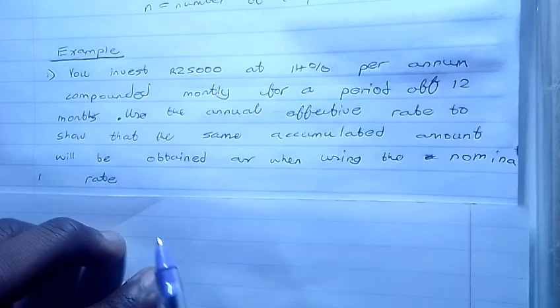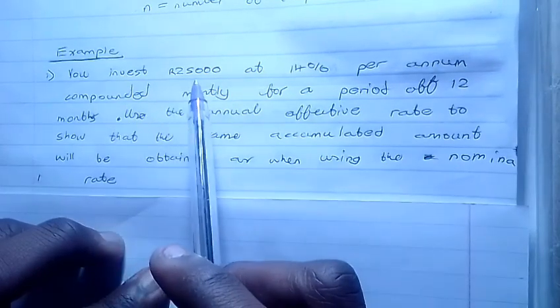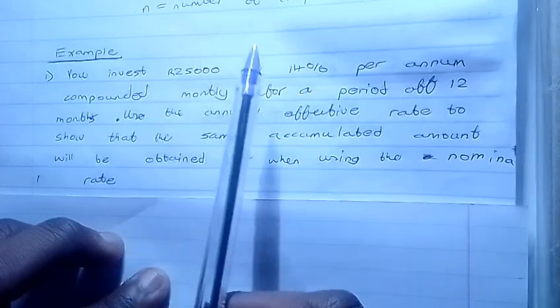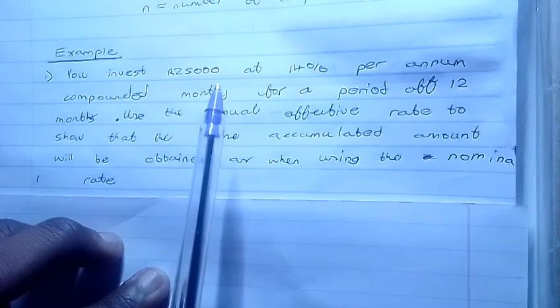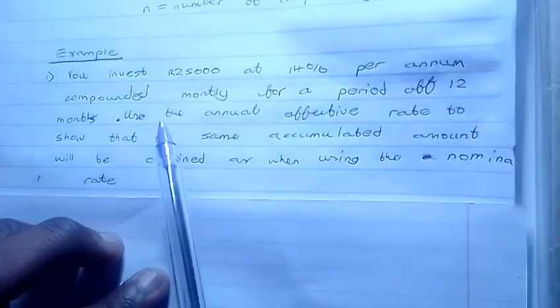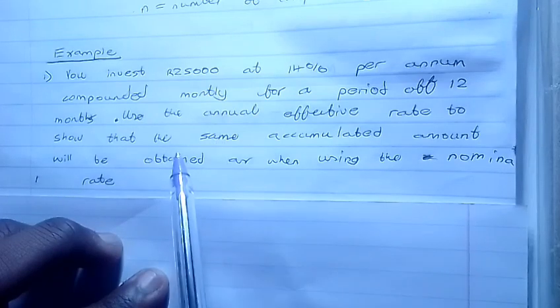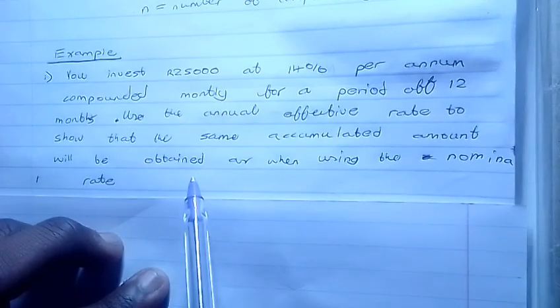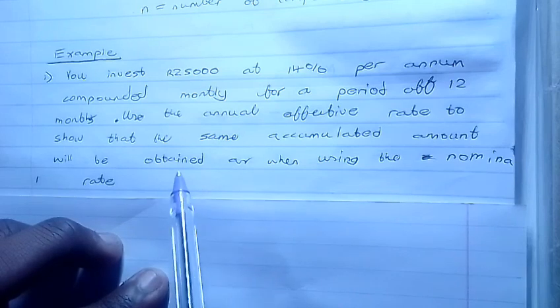So our first example says if you invest $25,000 at 14% per annum compounded monthly for a period of 12 months, use the annual effective rate to show that the same accumulated amount will be obtained as when using the nominal rate.